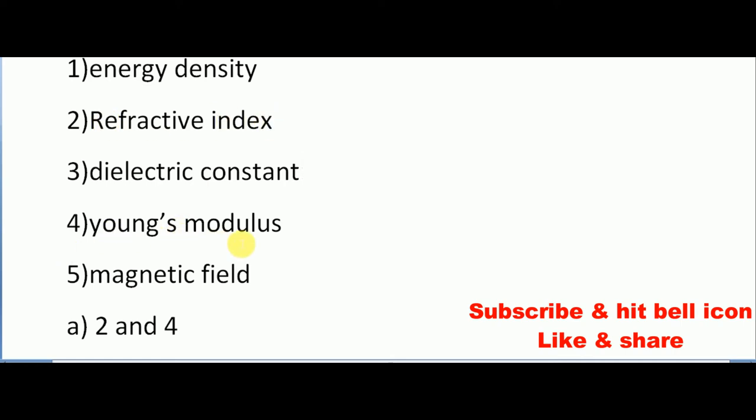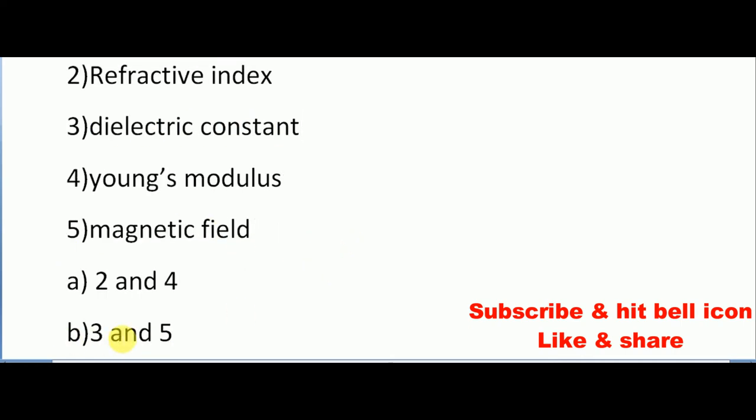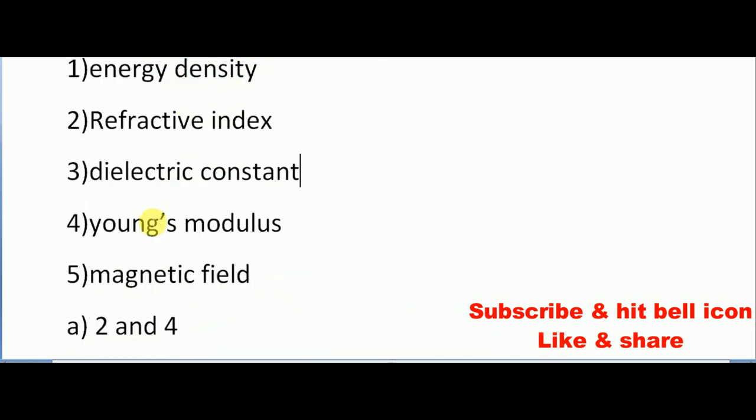And here are the options given: two and four means refractive index and Young's modulus, two three and five means dielectric constant and magnetic field, one and four energy density and Young's modulus, one and five energy density and magnetic field. The correct answer is one and four: energy density and Young's modulus.